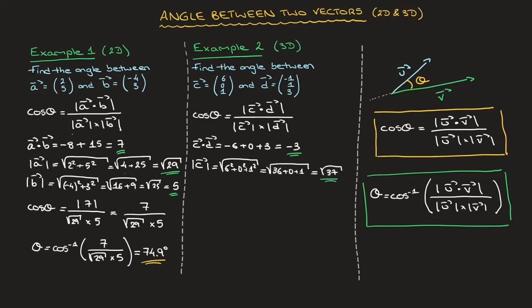Next, the magnitude of d. The magnitude of d is equal to the square root of negative 1 squared plus 1 squared plus 3 squared, which is the square root of 1 plus 1 plus 9. Adding all of that together, that's equal to the square root of 11.